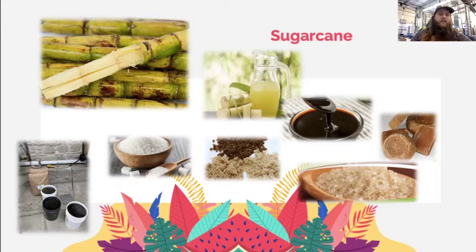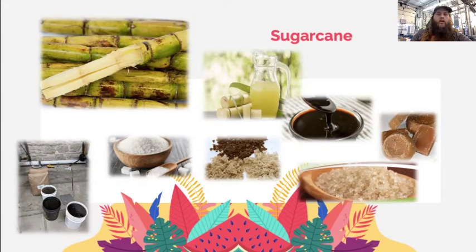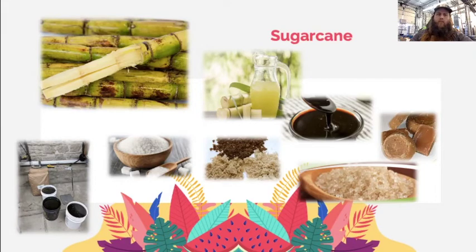Different varieties of molasses exist depending on what stage of the sugarcane process the molasses is collected at. Most are put into a few different categories: light, dark, and blackstrap being the darkest. The darker the molasses, the higher the mineral content and the lower the sugar content. Some molasses suppliers offer a premium molasses designed to work for rum fermentations, meaning they've filtered out a lot of the ash and other inconsistencies. This process aids in the repeatability of a rum.